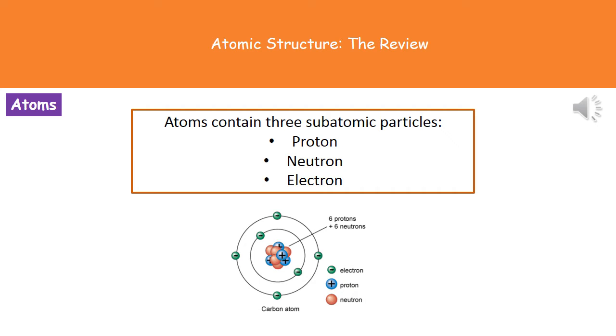And if we look at the diagram at the bottom there, we can see how they're actually arranged. So in the center what we have is a structure called the nucleus, and that is made up of our neutrons and the protons. And around the outside of that we've got these little shells or layers, and they contain our electrons.